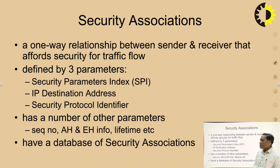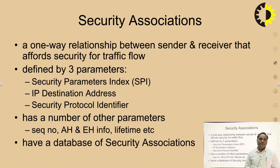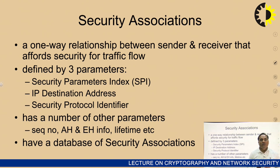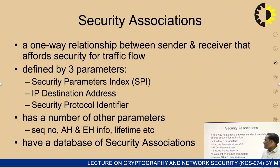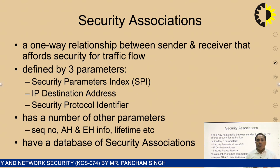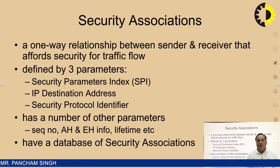Security association is defined by three parameters. The first is the Security Parameter Index, or SPI. The second is the IP destination address — without an IP destination address, your data will not move from one network to another. The third is security protocol identification, which means identifying which type of security protocol is working on which layer. Internet Protocol Security works on the third layer.